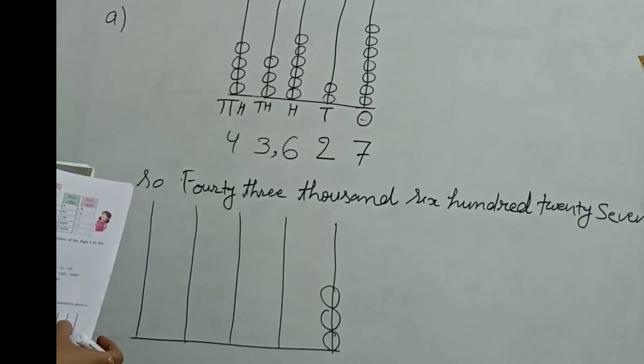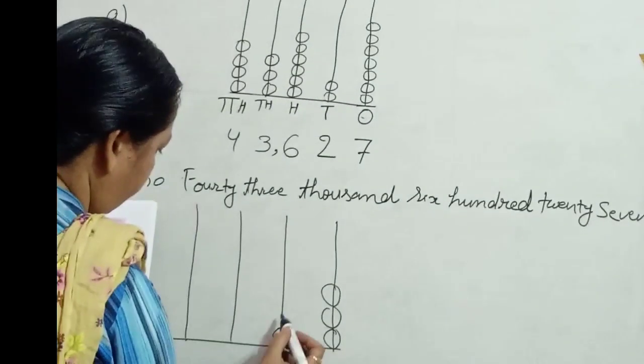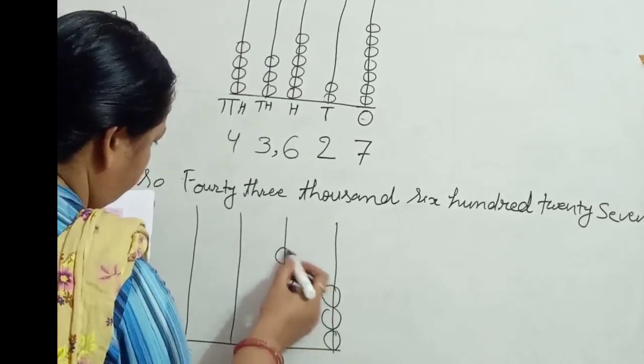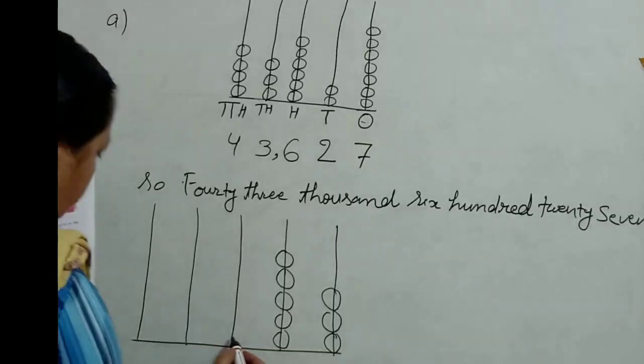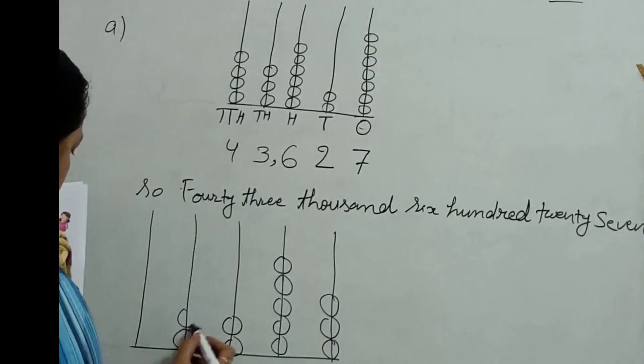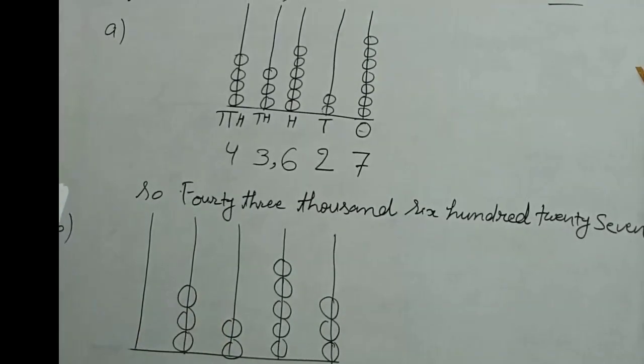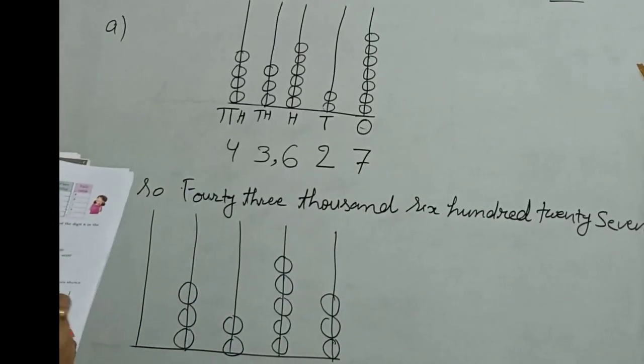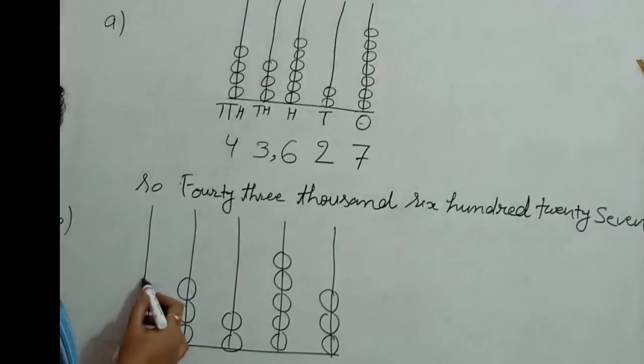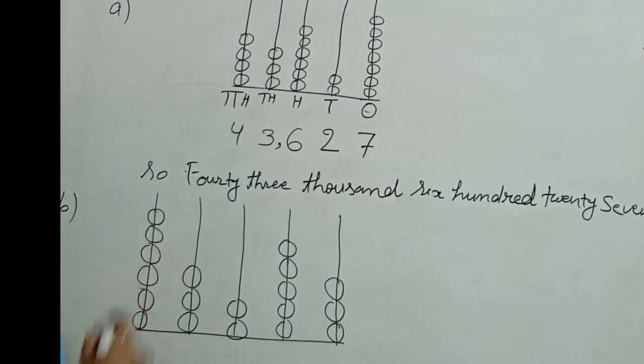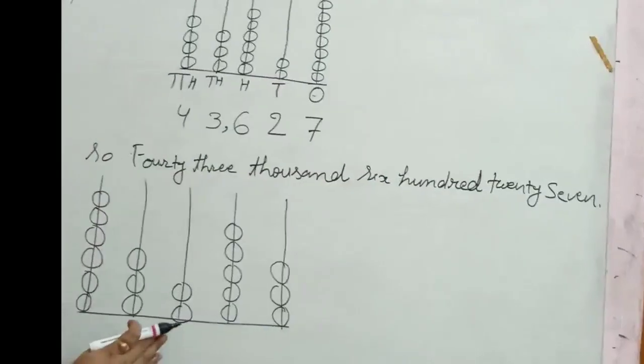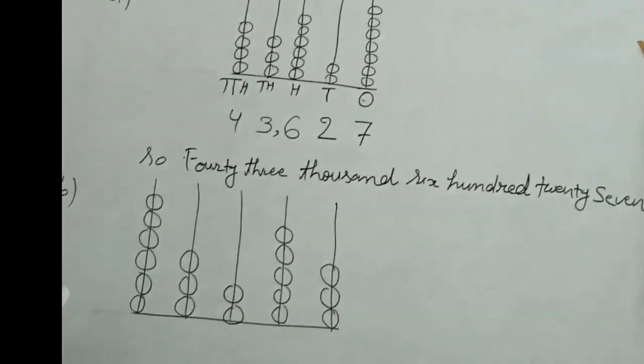1, 2, 3, 4, 5, 6 pearls are in the fifth stick. 5 pearls in the given stick, 2 pearls in the third stick, 3 pearls in the fourth stick, and 1, 2, 3, 4, 5, 6 pearls in the fifth stick. Now we place the place values.